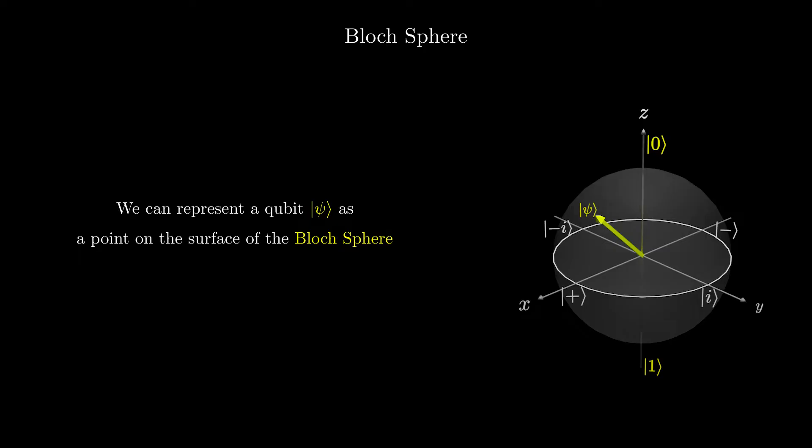On the top, we have the zero state, and on the bottom, we have the one state. On the horizontal, we have the plus state, minus state, i state, and negative i state.